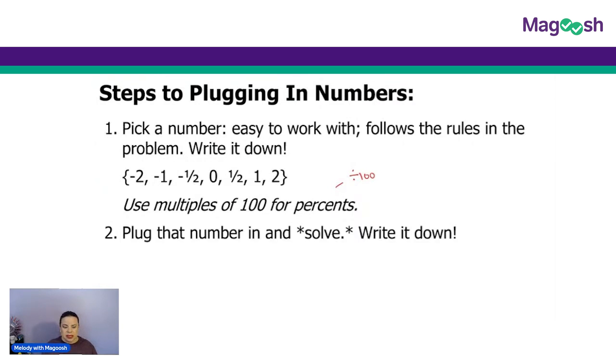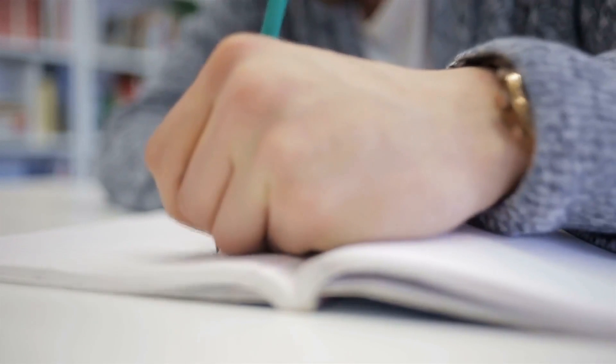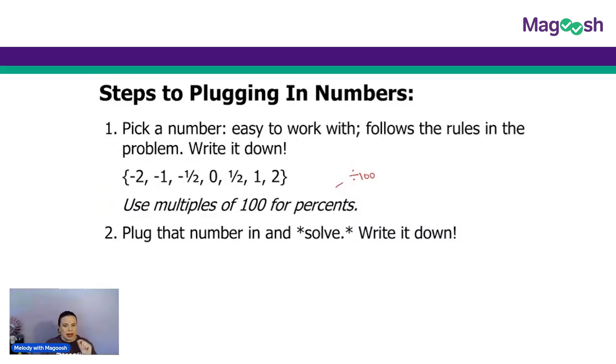Step two, after we've chosen those numbers, is we're going to plug those numbers in for the variables in the original problem and solve the problem by the numerical value that is the answer. We also want to write this down and make sure that it's very easy to find on your paper. I like to put a star by it or circle it, draw a little box around it, something that makes it stand out on my scratch paper.